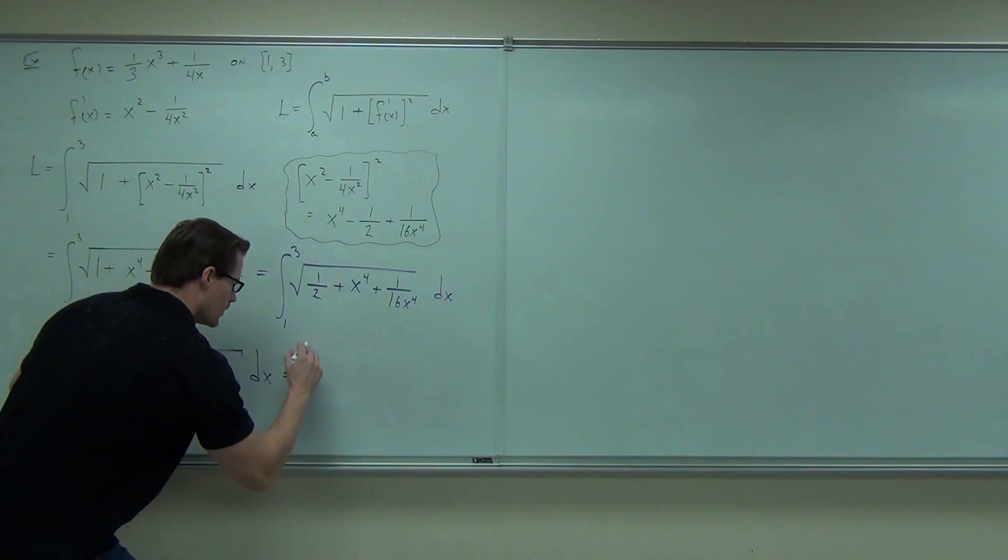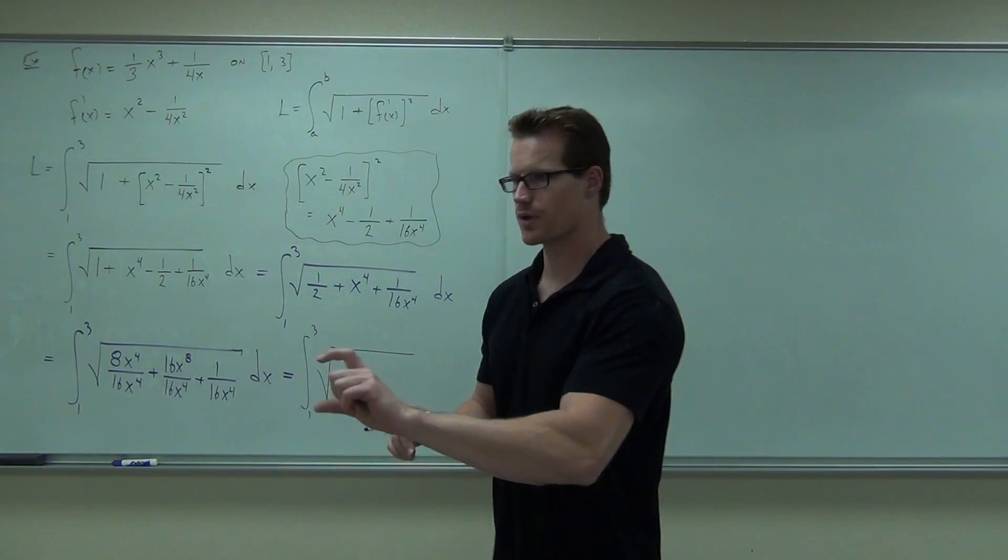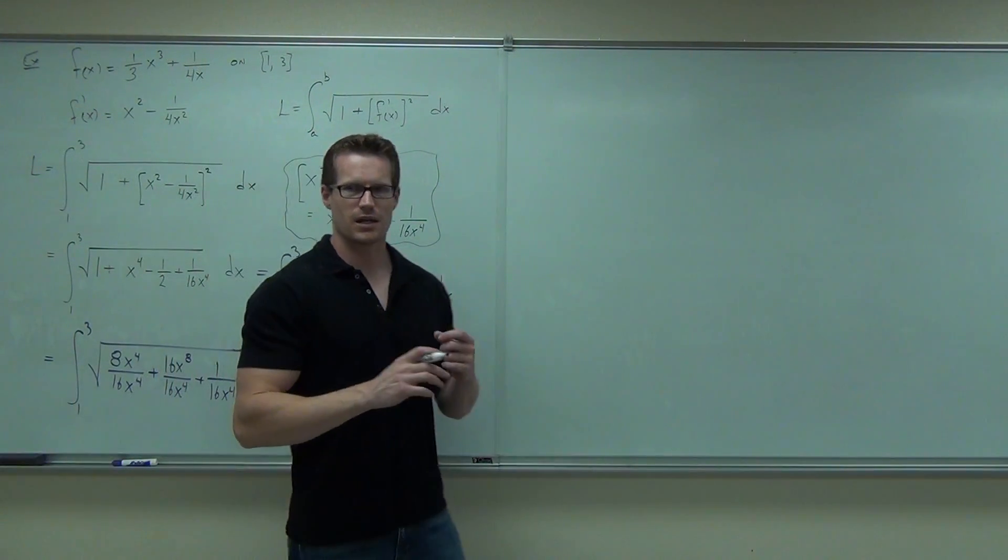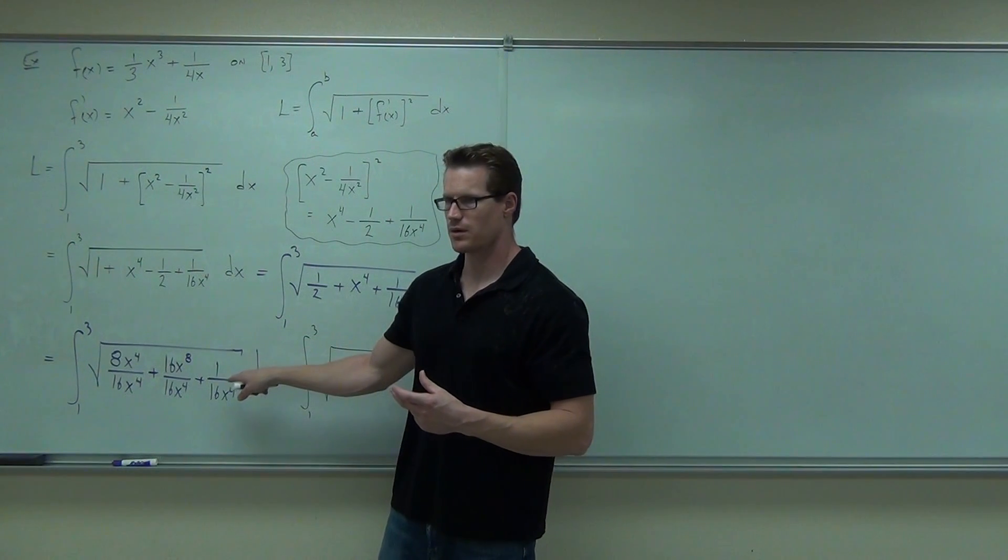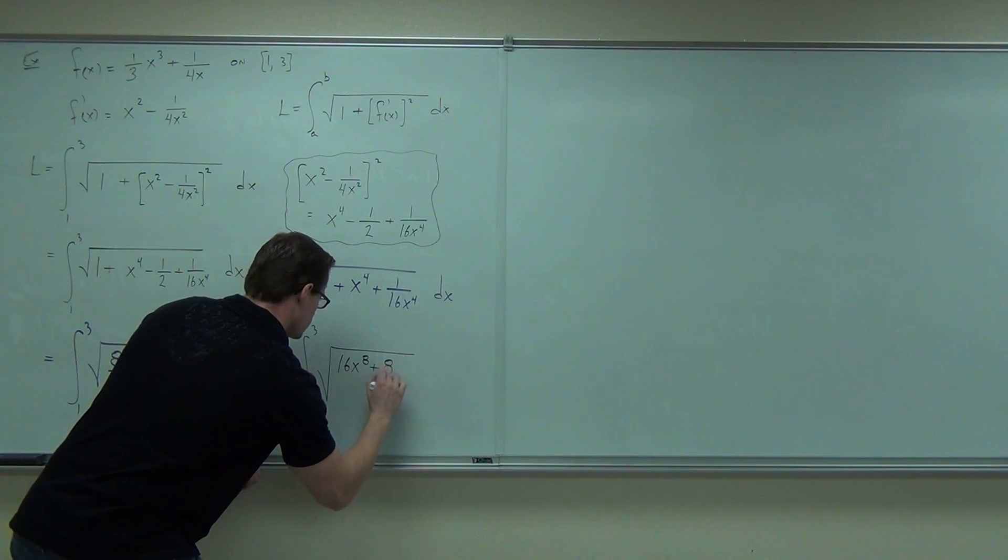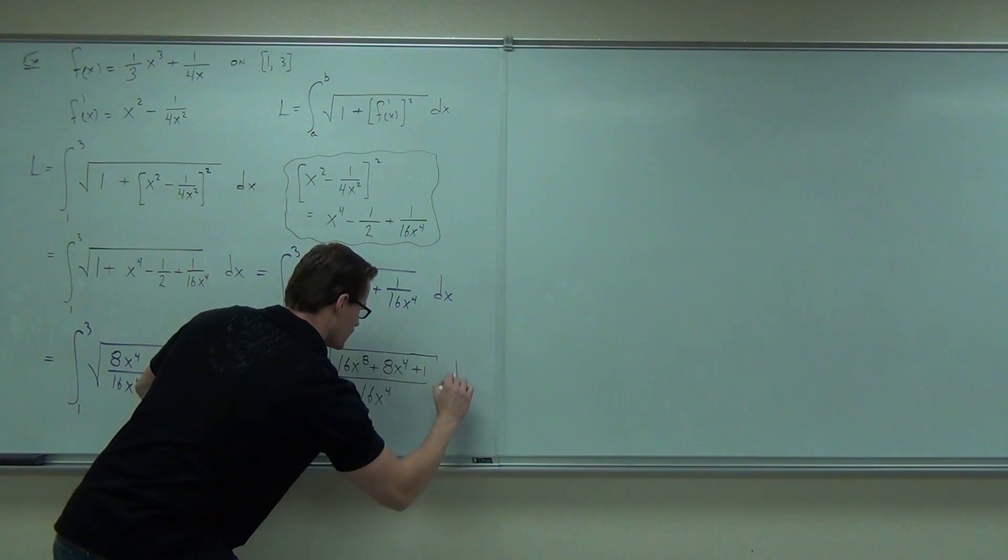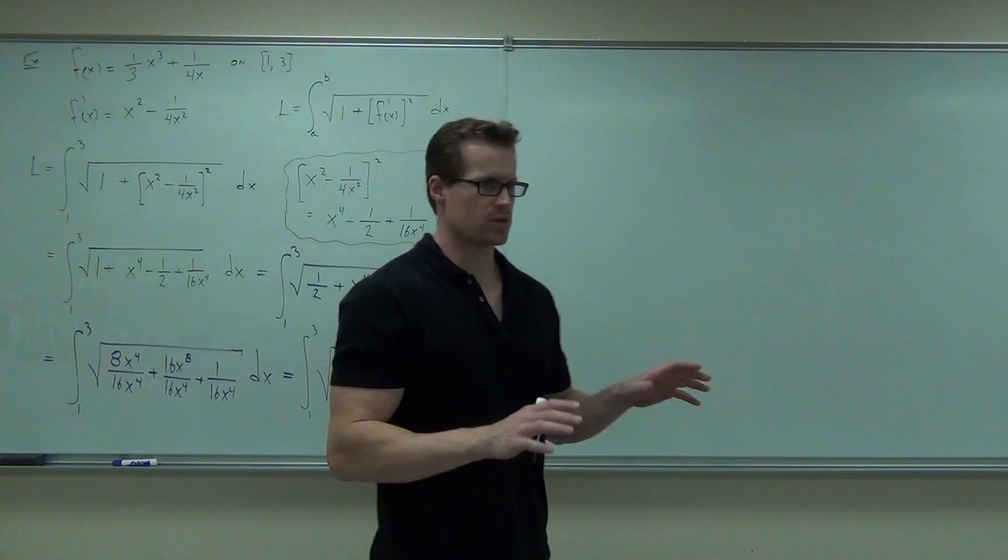And switch some pen so we get a different step here. So, that's an integral from 1 to 3. Big square root. Check out what happens. Now that I have that common denominator, I can make everything as one fraction with a denominator of 16x to the fourth on the bottom of a fraction. Also, I'm going to choose to write these in a different order. I'm going to write the 16x to the eighth, then the 8x to the fourth, and then the 1. Are you guys okay with that?